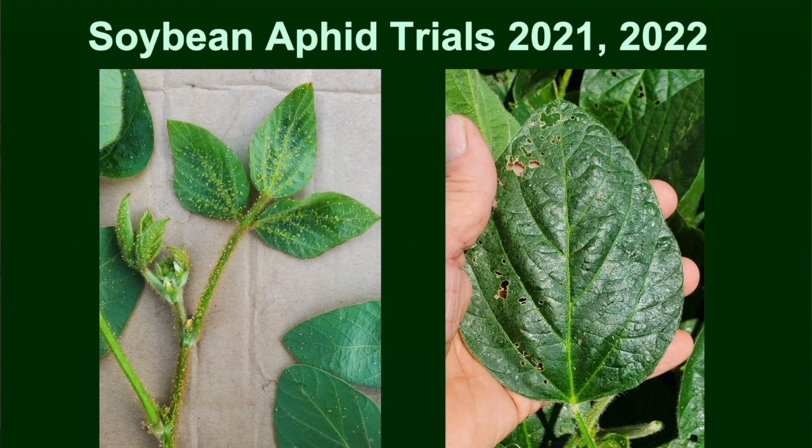Over time, more beneficial insects — not just insects, but predators of all kinds — have established. So the infestations nowadays are at more sort of lower levels. They come in slower, they build up slower. The buildup is much slower, and they crash earlier in the season.